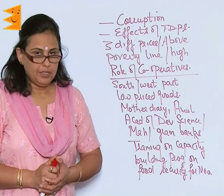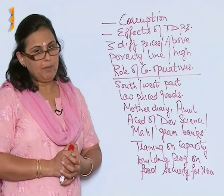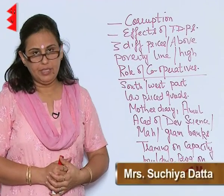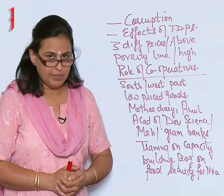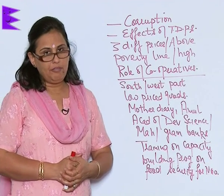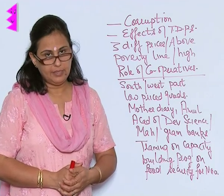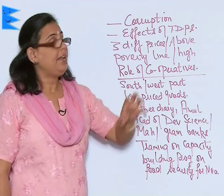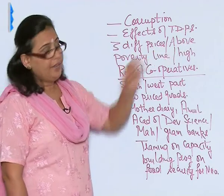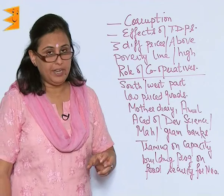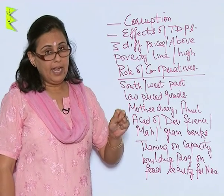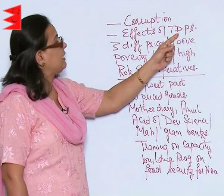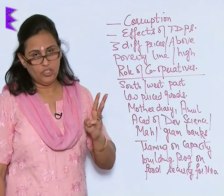We were talking of the disadvantages of the public distribution system. A lot of corruption has been seen in the public distribution system, wherein they are following many malpractices. Also, due to the effects of targeted programs which have been initiated, we see that the targeted public distribution system has led to three ration cards.